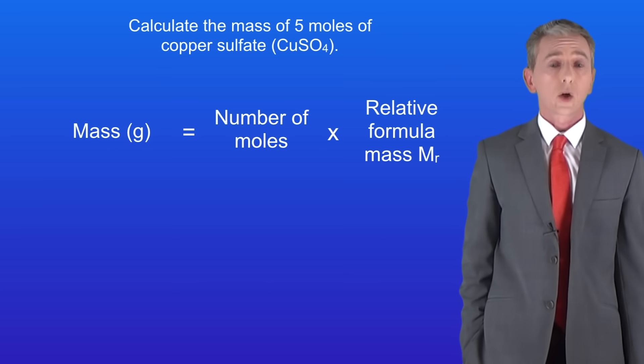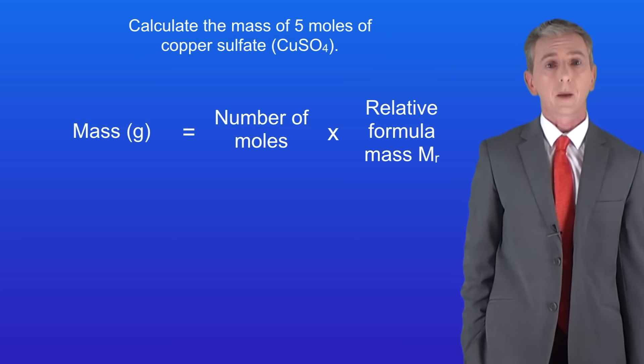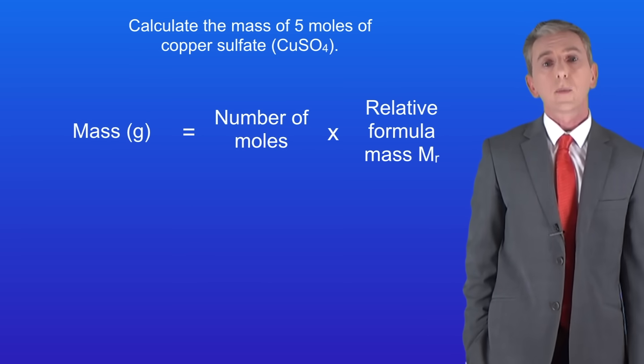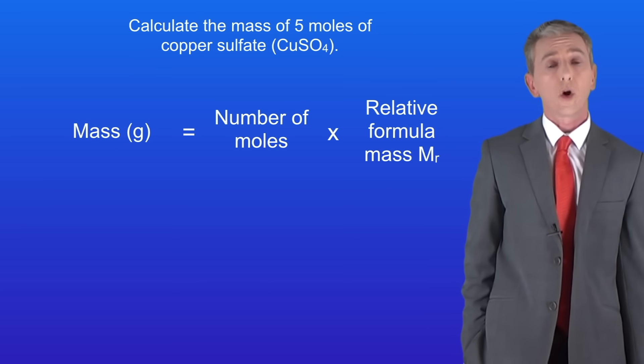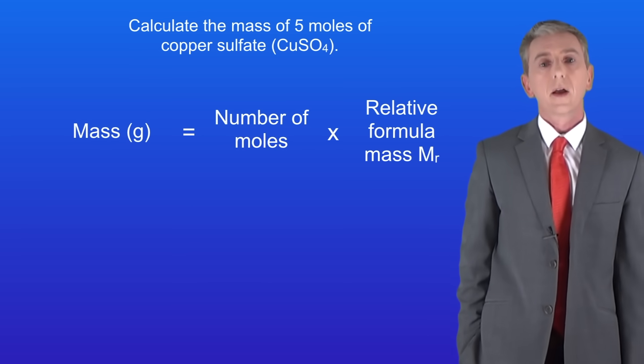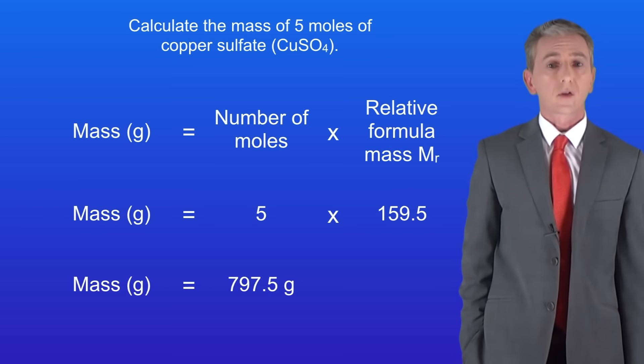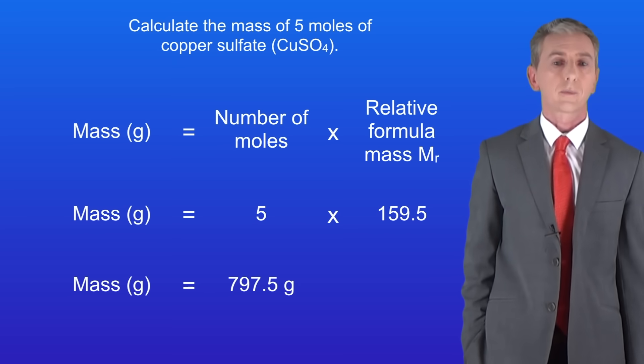Going back to the equation to calculate the mass, we multiply the number of moles by the relative formula mass. This gives us a final mass of copper sulfate of 797.5 grams.